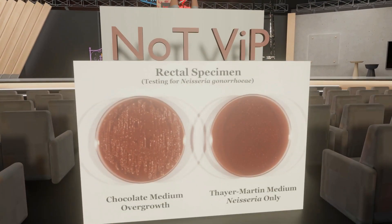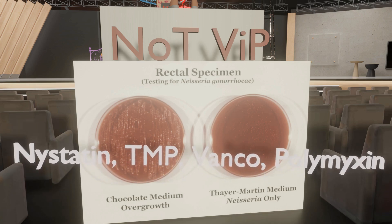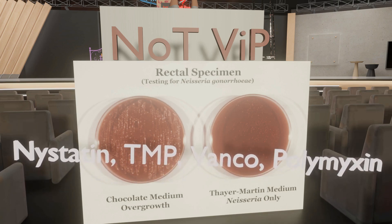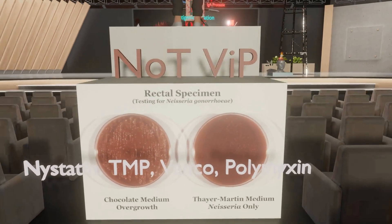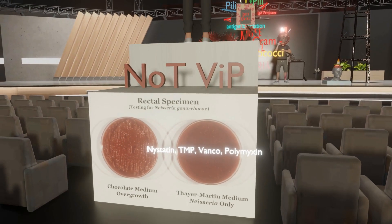Not-VIP reminds us of the four antibiotics used in the Thayer Martin agar: N for nystatin, T for trimethoprim, V for vancomycin, and P for polymyxin, also known as colistin. These four antibiotics are used because they affect pathogens besides NYSERIA. Vancomycin kills gram-positive organisms, nystatin kills fungi, and colistin and trimethoprim kill gram-negative species other than NYSERIA. What remains after applying these antibiotics — hopefully — is only NYSERIA, and that's why it's used to identify NYSERIA.